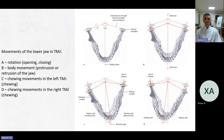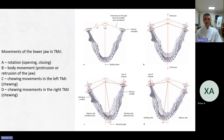Movements of the lower jaw in the TMJ include: rotation (picture A), body movement or protrusion of the jaw (picture B), chewing movement in the left TMJ (picture C), and chewing movement in the right TMJ (picture D). During chewing there are two sides — the working side and the balance side. These chewing movements also demonstrate the Bennett angle.